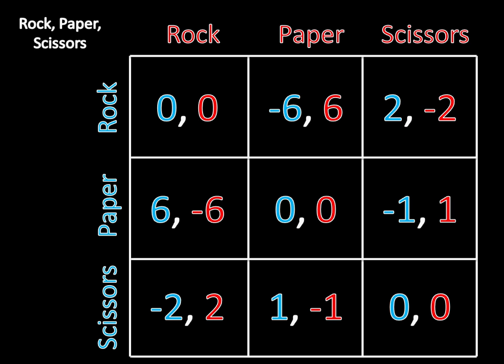A symmetric game is a game that is, as it sounds, symmetric among its strategies and its payoffs. The players have the same strategies and they also have the same payoffs given what their strategies are. So if we switched each player's strategies, we would be switching their payoffs. If player one plays Paper and player two plays Rock, then player one earns six and player two earns negative six. But if we switch so that player one plays Rock and player two plays Paper, now player one earns negative six and player two earns six.